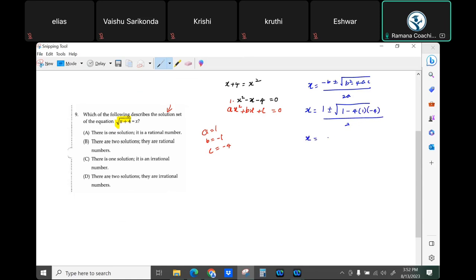So x equals 1 plus or minus, what is 4 times negative 4? Negative 16. And when you subtract negative 16, what does it become? It becomes addition. So what is 1 plus 16? 17. So square root of 17.